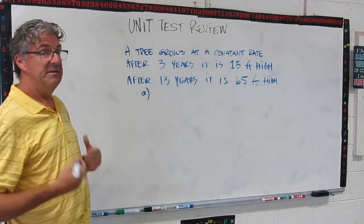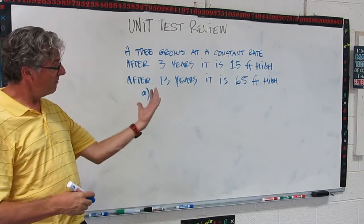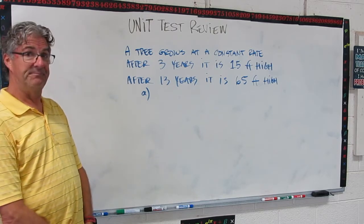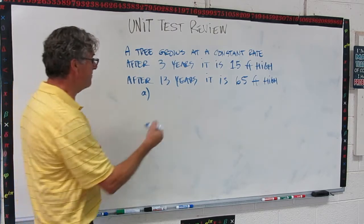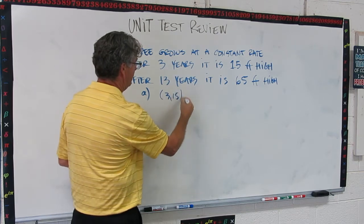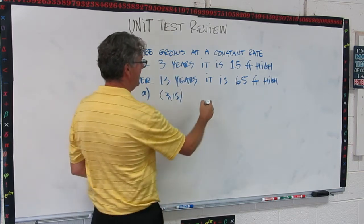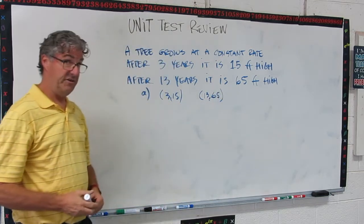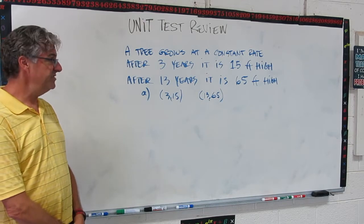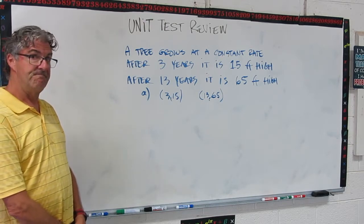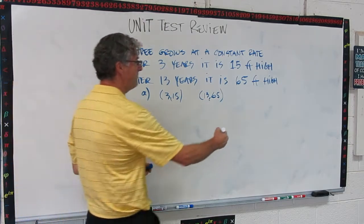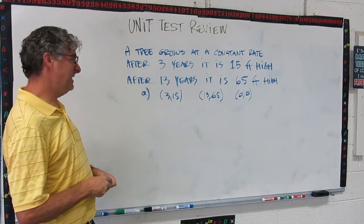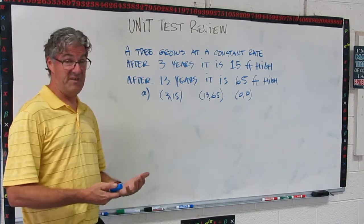B would be, name two points on this graph of this tree height versus time. So go ahead and pause the video and do that. Okay, if you came up with these, you're good. The first point is three years, 15 feet high, and the second point is 13 years, 65 feet high. Now, there's one more point that you could list for this. Pause the video and see if you can come up with it. Okay, if you came up with zero, zero, you're right, because at zero years old, it's zero feet high. So that tells you something there, too. Okay.